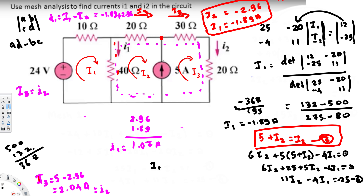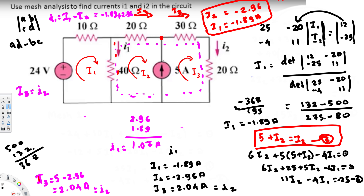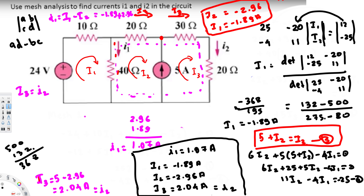To summarize all results: mesh current i1 = negative 1.89 amperes, mesh current i2 = negative 2.96 amperes, mesh current i3 = 2.04 amperes, which equals small i2. And small i1 = 1.07 amperes. That's our final solution. I hope this helps — thanks for watching.